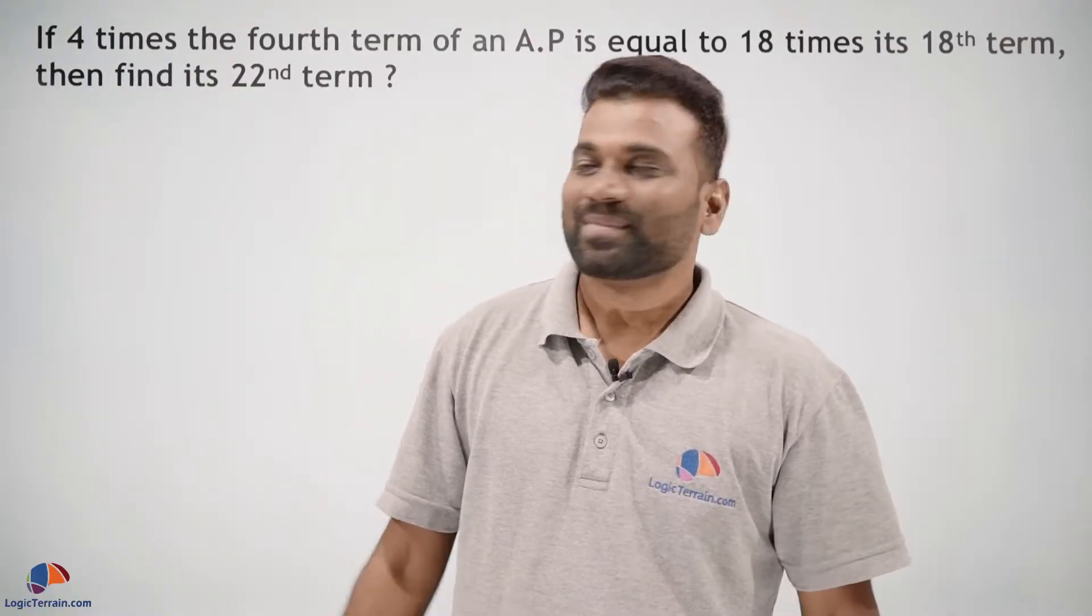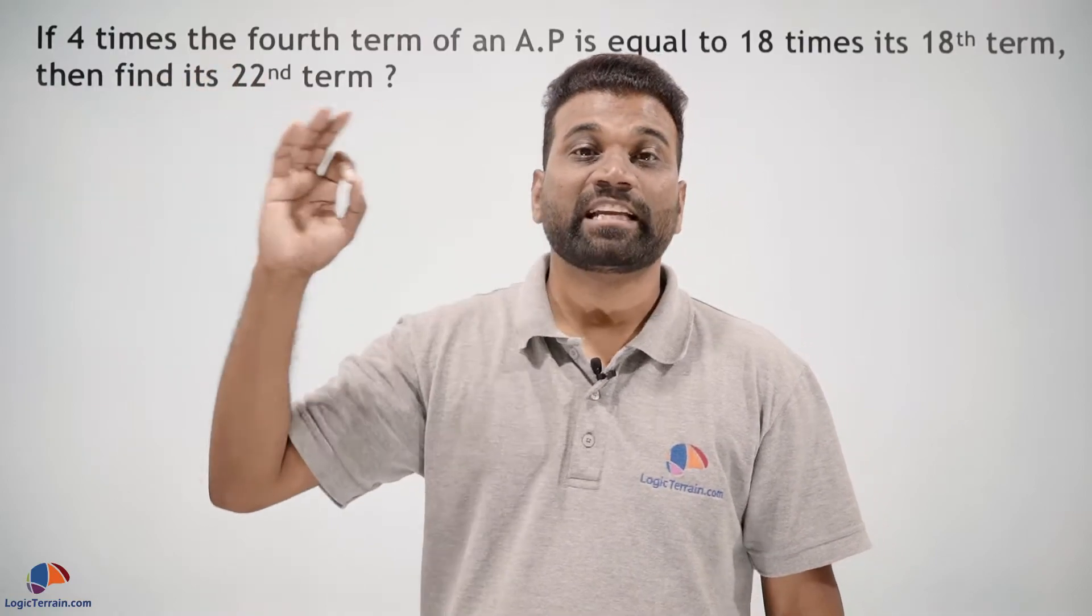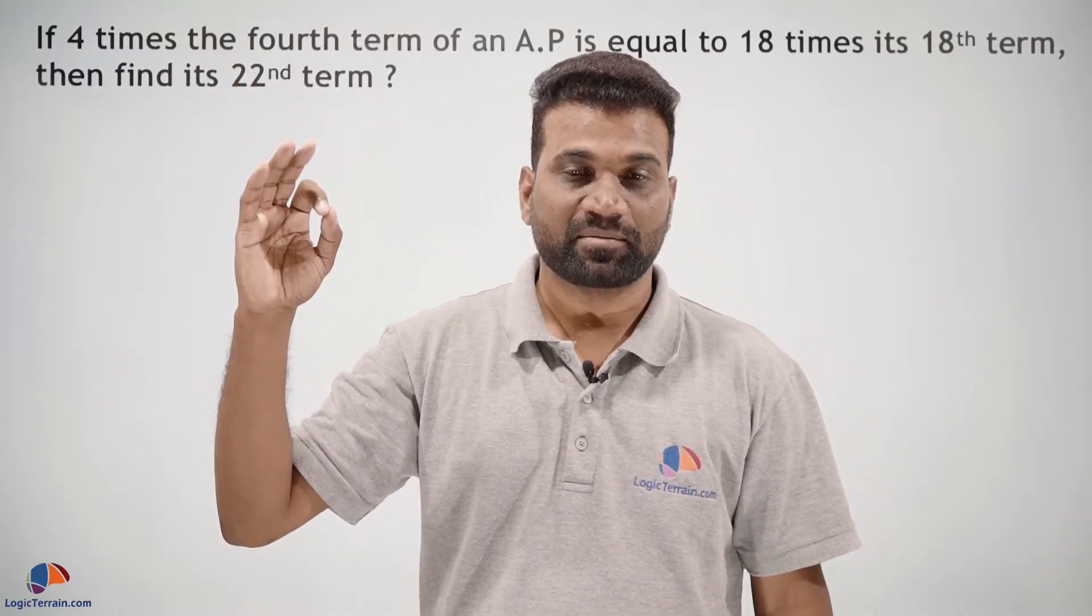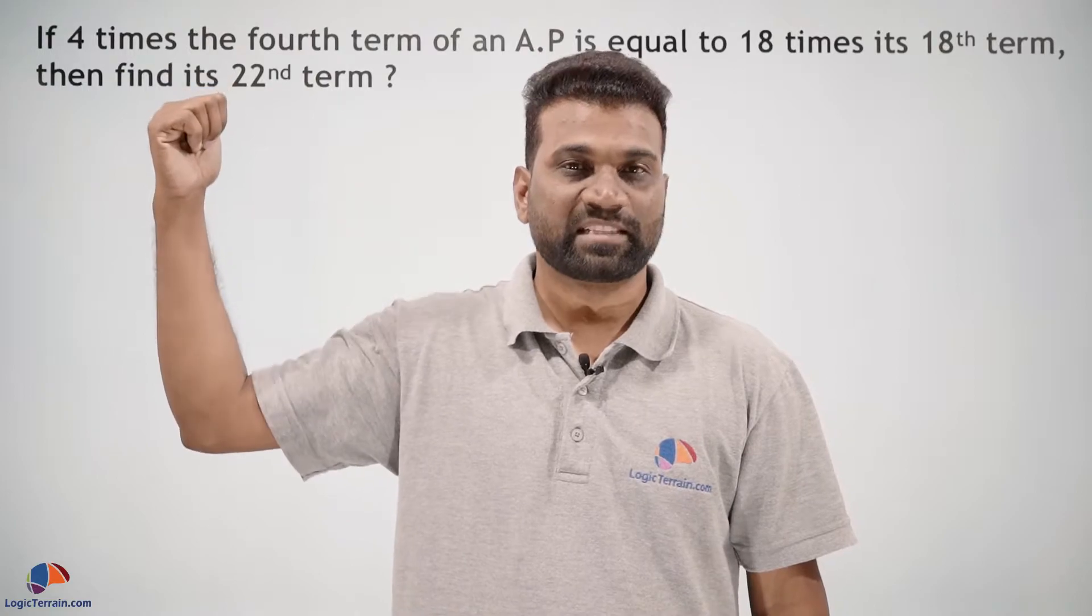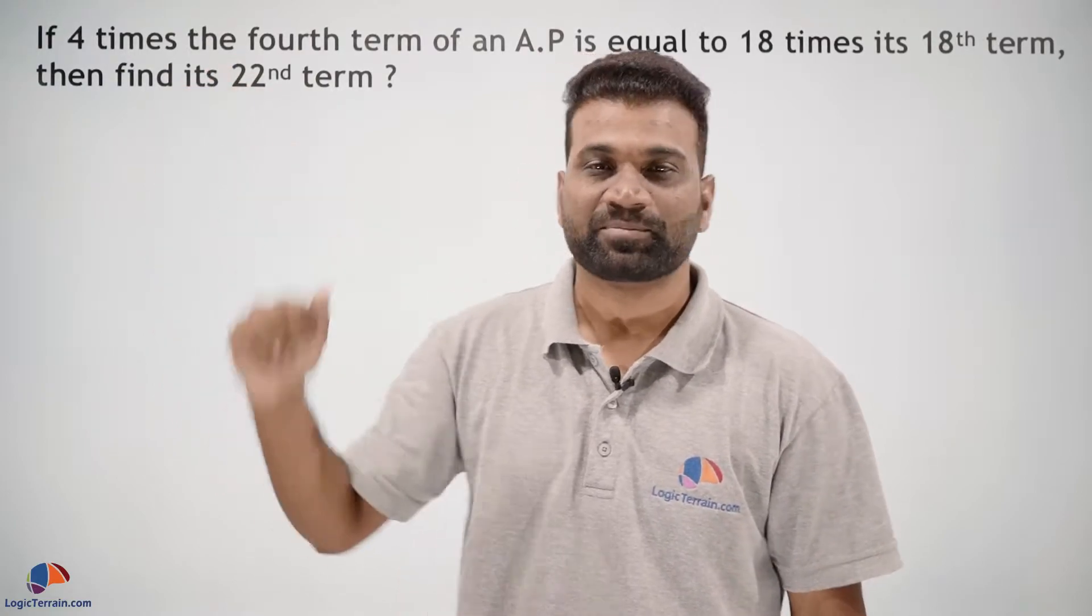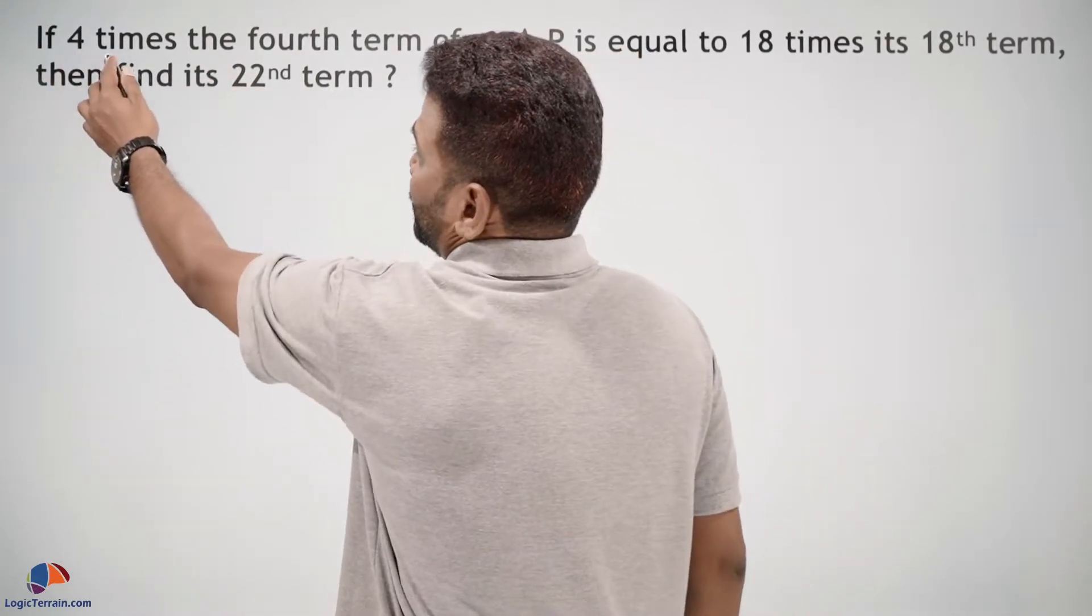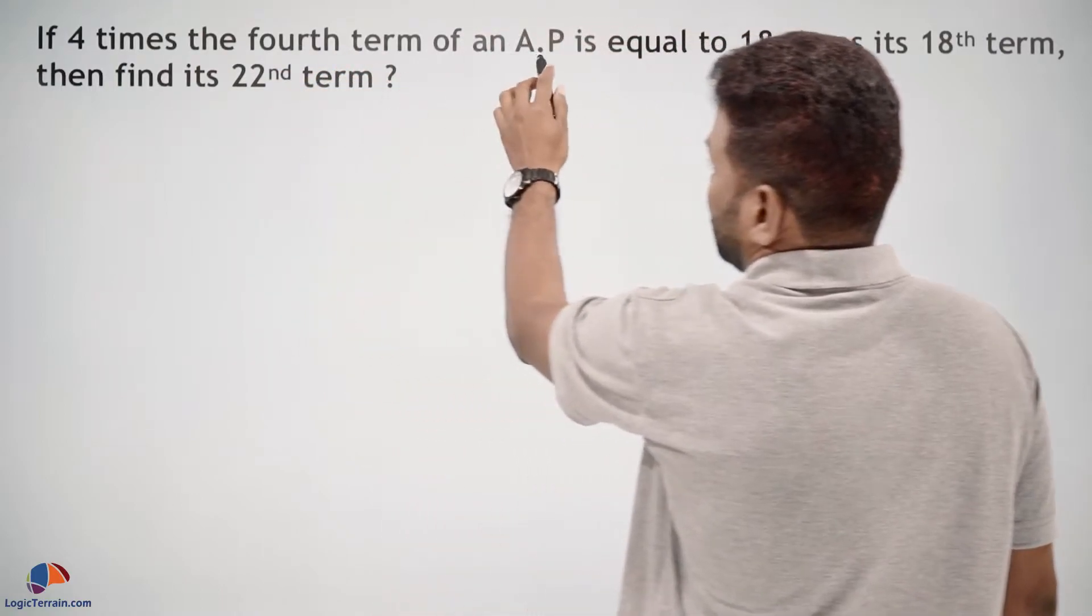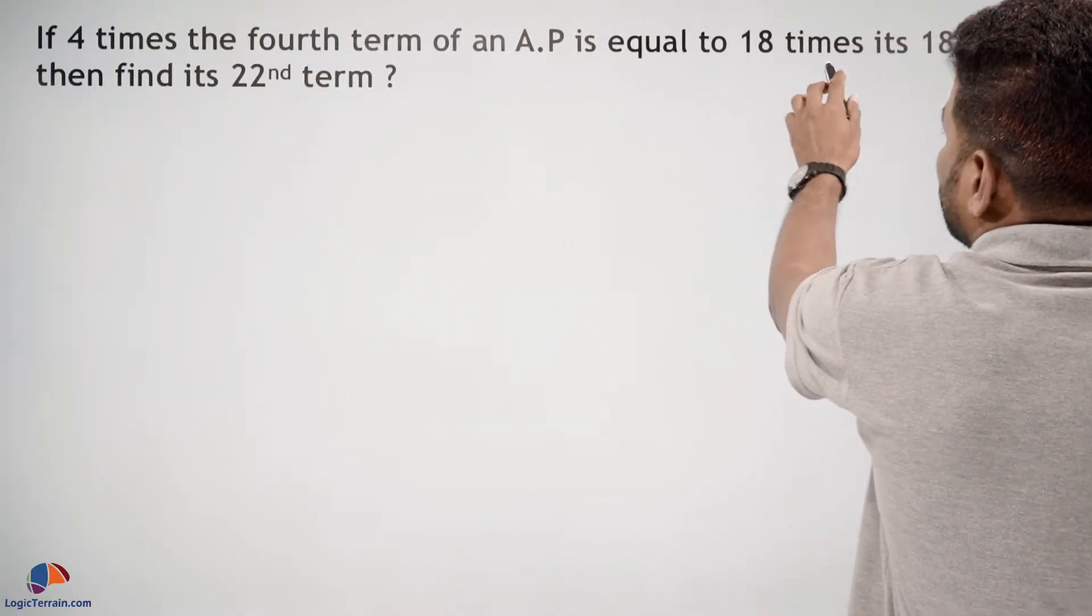Hello dear students, here is our question which is very important because this is one of the previous board questions, so follow carefully. If 4 times the 4th term of an AP is equal to 18 times its 18th term,